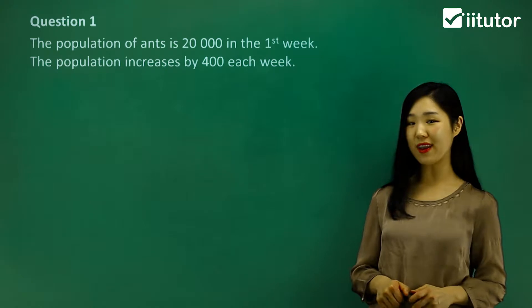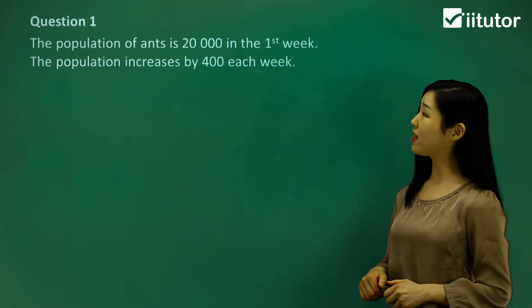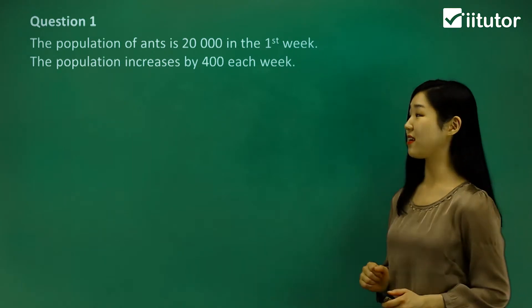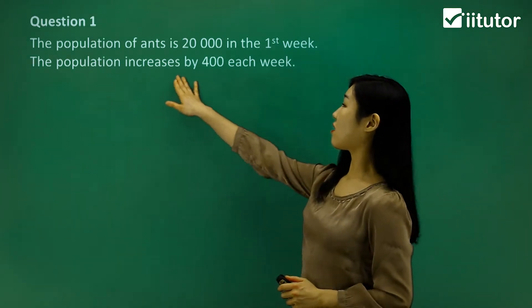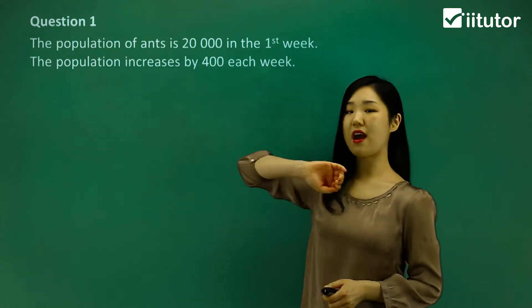I'm going to go straight into question one. It says the population of ants is 20,000 in the first week, and the population increases by 400 each week. So we begin with 20,000.